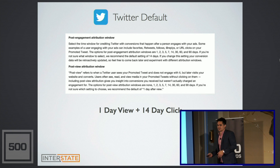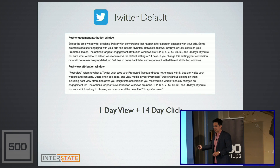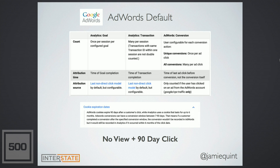Twitter takes credit for one-day view and 14-day click by default. These are just the defaults — a lot of these platforms will let you change them. AdWords, which is the third thing in our conversion path, doesn't take credit for views. But if you click on an ad and then convert 75 days later, that person's AdWords dashboard is going to show there was a purchase and they got value for it.